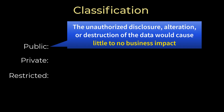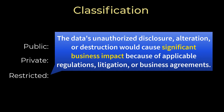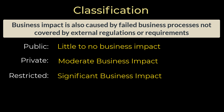Public means the unauthorized disclosure, alteration, or destruction of data would cause little to no business impact. If unauthorized disclosure, alteration, or destruction would cause moderate business impact because of applicable regulations, litigation, or business agreements, the data is classified as private. If it would cause significant business impact — from which the business may not recover — it is classified as restricted. Correct classification ensures data safety throughout its life cycle, enables implementing needed safeguards, and saves money when safeguards aren't needed.